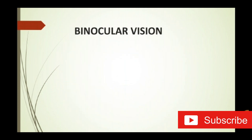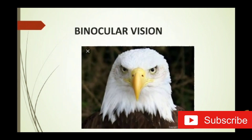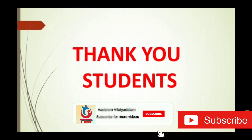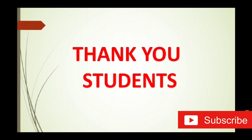And binocular vision — birds have binocular vision, that means they can see one object with one eye and another object with the other eye at the same time. So students, I hope you understand about the adaptation of fish and birds. In the next class we will learn about the adaptation of camel and lizard. Thank you students.